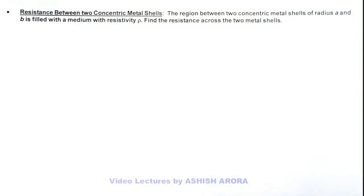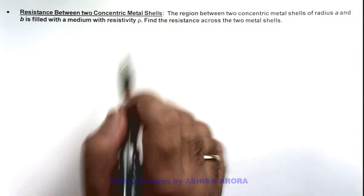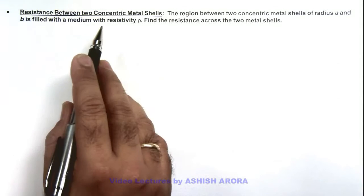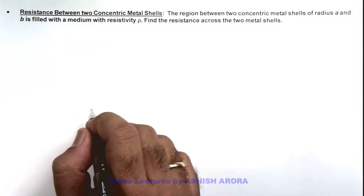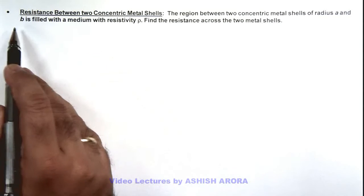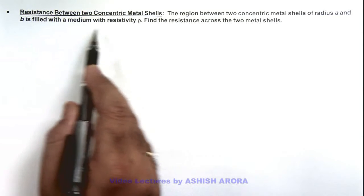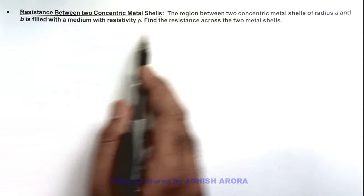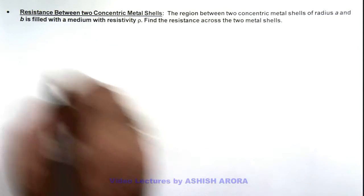In this illustration we'll demonstrate the calculation of resistance between two concentric metal shells. Here we are given that the region between two concentric metal shells of radius a and b is filled with a medium with resistivity ρ. We are required to find the resistance across the two metal shells.